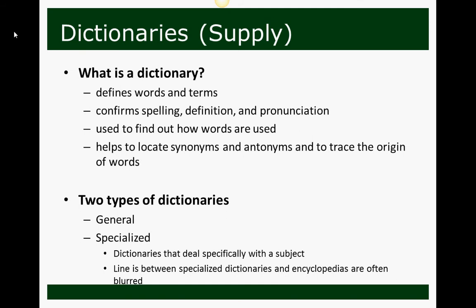There are two types of dictionaries. You have general, which is your Merriam-Webster's or your Oxford English Dictionary, but you also have specialized dictionaries — those that deal specifically with a subject. For example, a dictionary of medical terms will give you definitions, spellings, and pronunciations for medical terms. The line between specialized dictionaries and encyclopedias can be blurred because they tend to serve the same function.